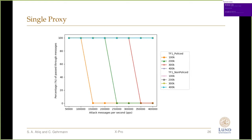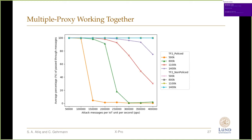For the single proxy high-rate attack result, it behaves as expected. Whenever traffic hits higher than the threshold, XDP drops all bogus packets — the percentage of pass-through messages drops to zero. For multiple proxies working together, it takes time to synchronize because synchronization between proxies happens periodically. So it's not an immediate drop upon detection — it depends on how often the proxies perform the synchronization function.